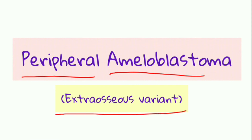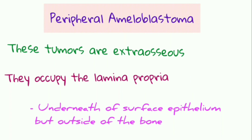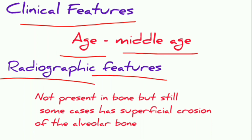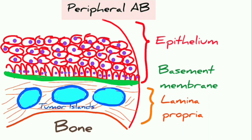Peripheral ameloblastoma is also called the extra-osseous variant, as the tumor is found outside of the bone within the gingiva. It is the extra-osseous counterpart of ameloblastoma and occupies the lamina propria underneath the surface epithelium. Clinically, it involves middle-aged patients. Radiographically, since it is not present in the bone, only superficial erosion of the alveolar bone may be seen.